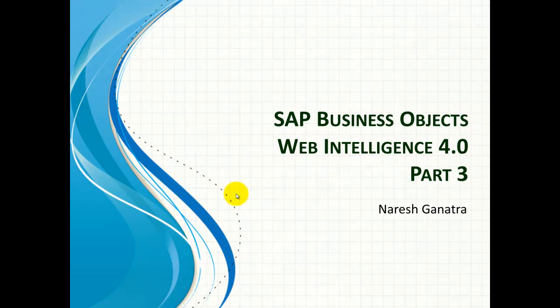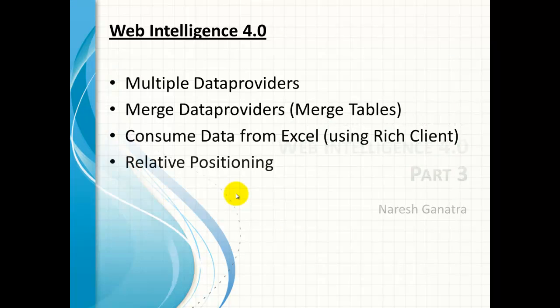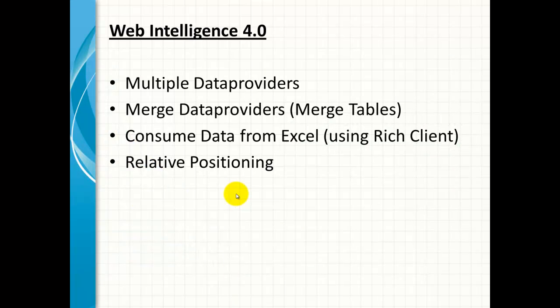Hey DAI folks, let's go ahead and take a look at a few more functionalities in web intelligence: multiple data providers, merging these data providers — or as I've heard some people call it, merging tables — consume data from Excel, for which we'd use Rich Client, and then relate to positioning between tables on the same tab.